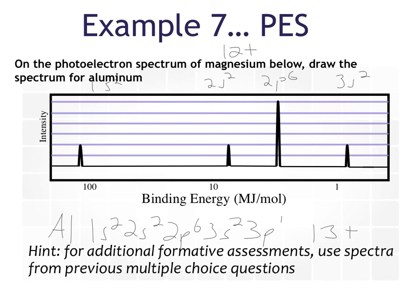I'll do these in red. My aluminum peak is going to be here — there's 1S, relative; we don't need to know where it is, we just need to know it's higher energy. There's my 2S aluminum peak, my 2P peak for aluminum — a little higher energy. I still have my 3S peak for aluminum, a little higher energy. But then over here — 3P1 — I need another peak over here, and it's a little lower. So all of those peaks are going to be shifted to the left; I have an extra one on the end for 3P, and it has to be half the height.